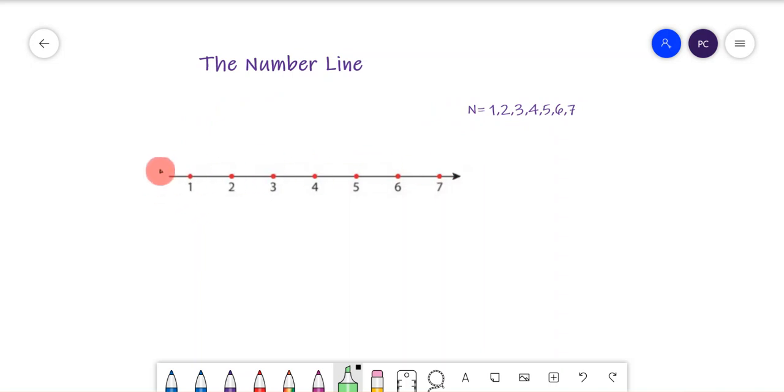As you can see here, we have this line and then we have an arrow that's pointing in this direction. Basically what that's indicating is that the line goes indefinitely, or forever, or to infinity in this direction here.